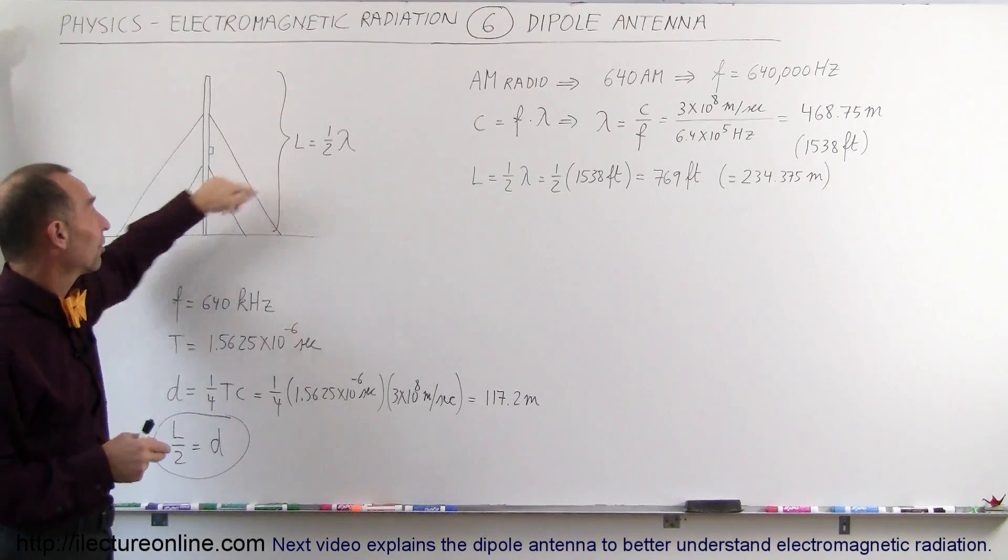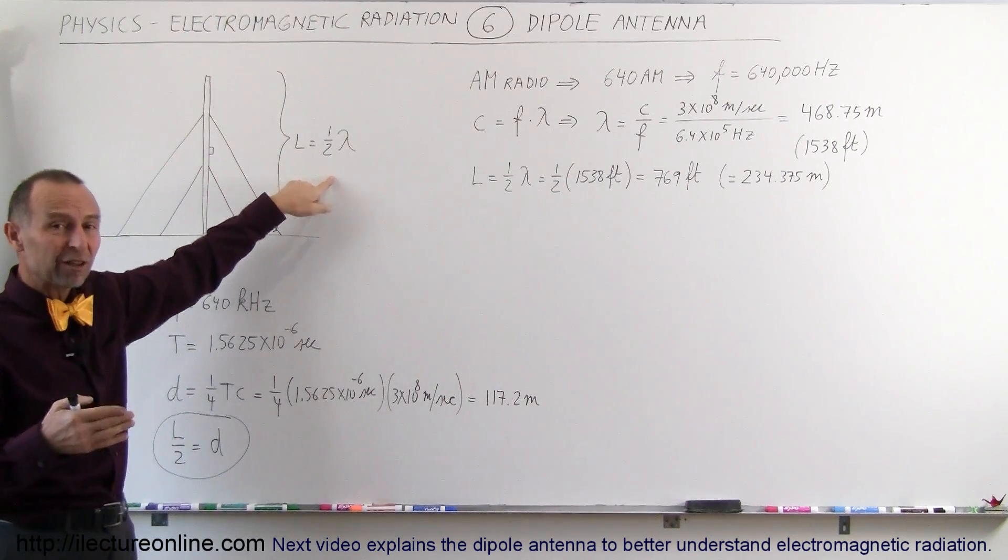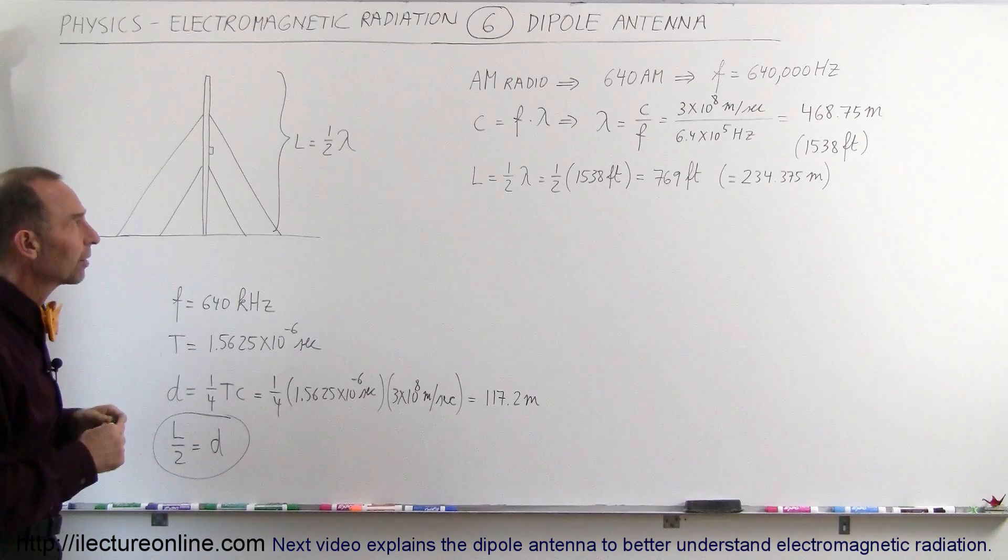The perfect relationship is that the length of the antenna is about half the wavelength of the radio broadcast that you're trying to broadcast.